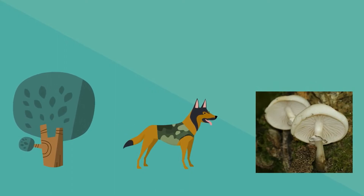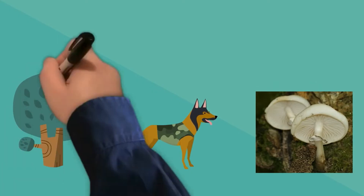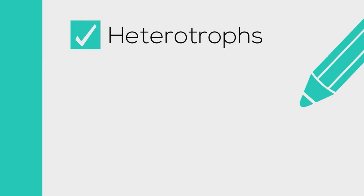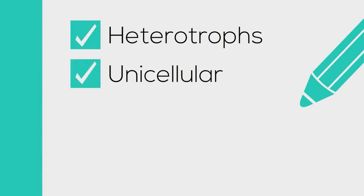Animal-like protists are called protozoans. These protozoans have a couple common characteristics. First, they are heterotrophs, which means they cannot manufacture their own food. Second, almost all protozoans are unicellular, and finally they live in moist environments.